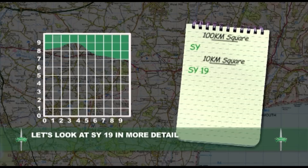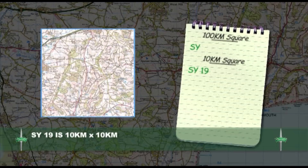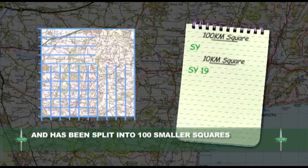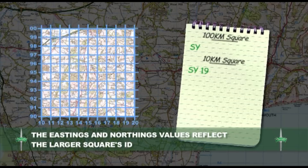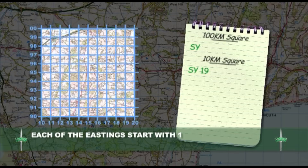Let's look at SY19 in more detail. SY19 is 10km by 10km, and it has been split into 100 smaller squares, each 1km by 1km. You can see that the Eastings and Northings values reflect the larger square's ID — in this case, each of the Eastings values starts with a 1, and the Northings start with a 9.